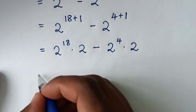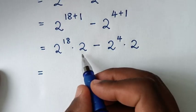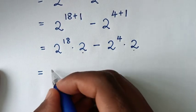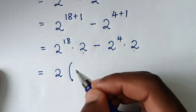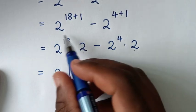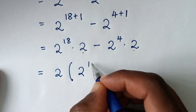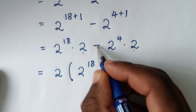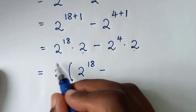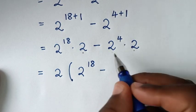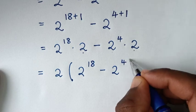In the next step, 2 is now in common, so we'll take 2 out of the bracket. This divided by 2 gives 2 power of 18, then minus this divided by 2, which gives 2 power of 4.